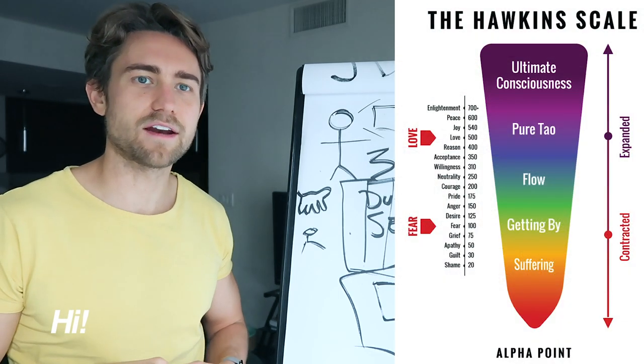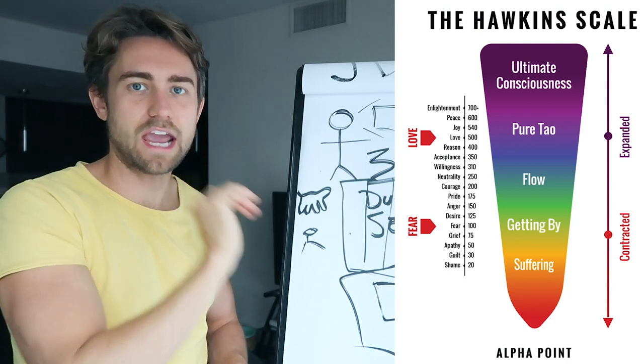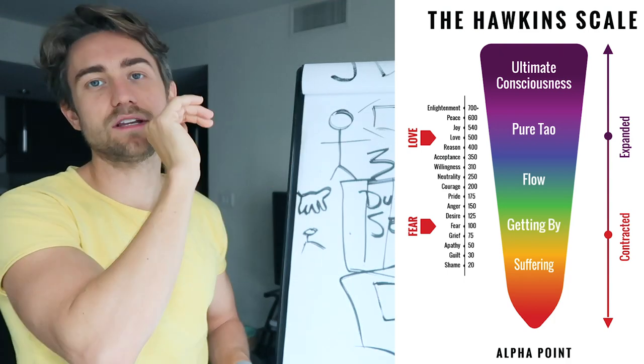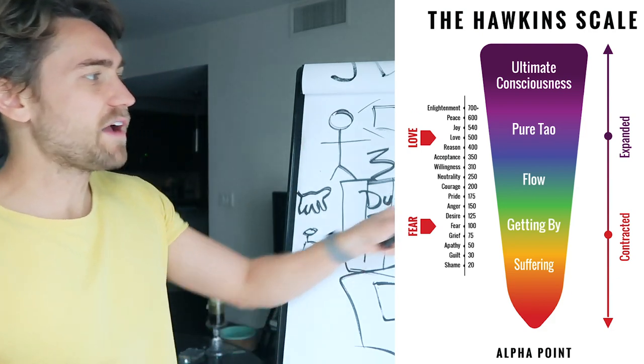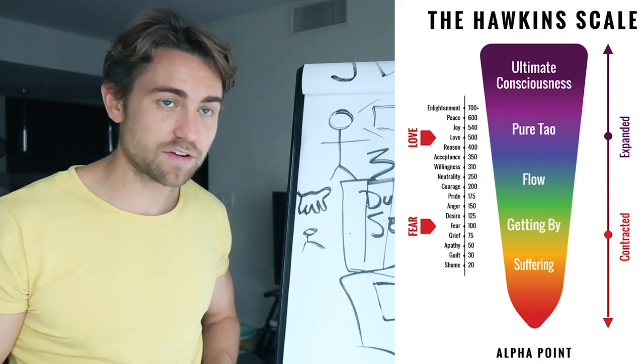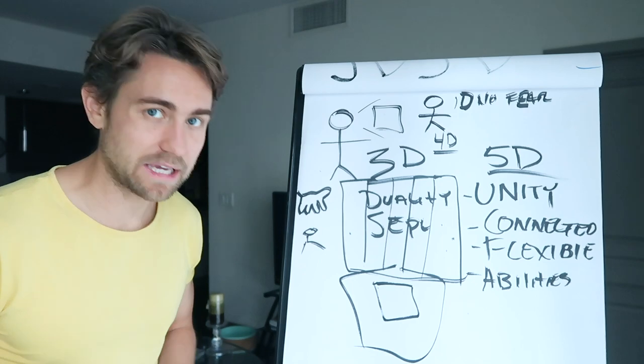When you see me show that chart of levels of consciousness as well - Daniel is the editor, he'll put it right there - you'll see shame, fear, guilt, anger, neutrality, then willingness, reasoning, love, joy, peace, enlightenment. 5D level of consciousness is when you mainly exist in the levels of reasoning, love and above. That's mainly where we are headed and where we can be.